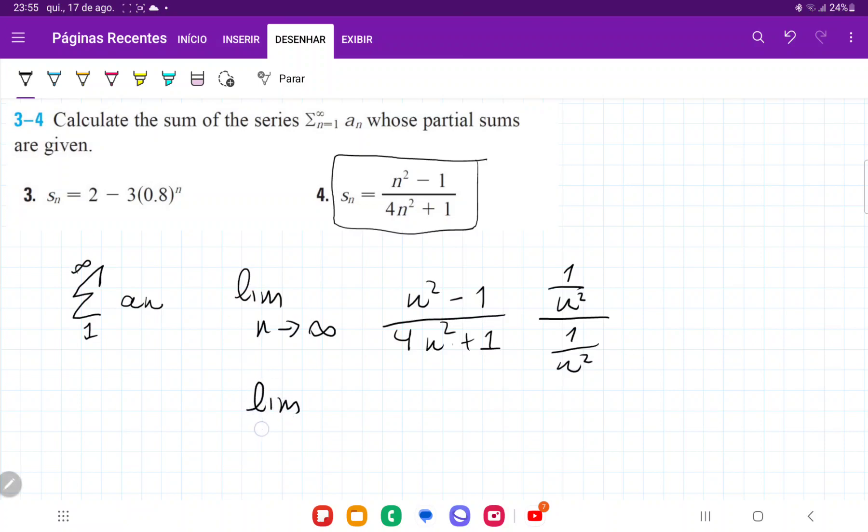This is the same thing as the limit as n approaches infinity of n squared divided by n squared is 1 minus 1 over n squared, 4n squared divided by n squared is just 4, and then plus 1 over n squared.